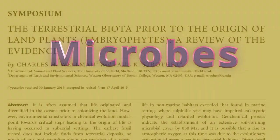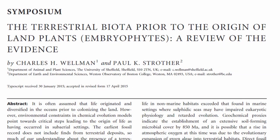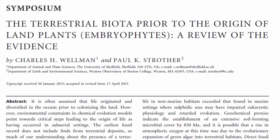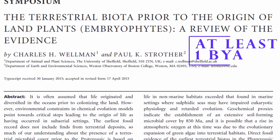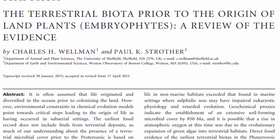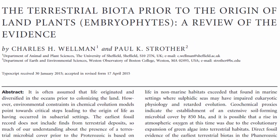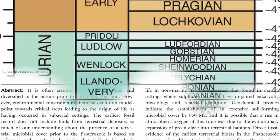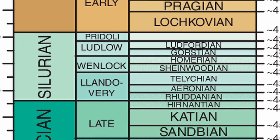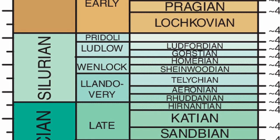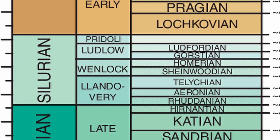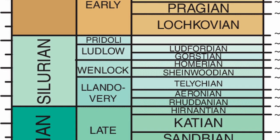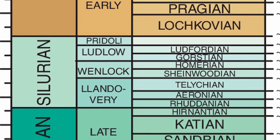First, microbes. Microbes had moved to land by at least a billion years ago, and likely a lot earlier. And some of these microbial mats and crusts were still around, living their lives in the Silurian, when our story of land plants and other life moving to land was already well underway.